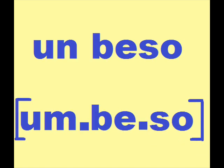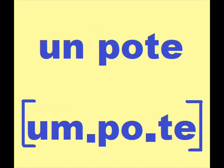There's also assimilation when you have an N and a B, because the N takes the point of articulation of the B, so it actually sounds like an M. For example, un beso — said quickly — sounds like un beso, because the N is taking the bilabial point of articulation of the B. The same thing happens in un pote — because P is bilabial, you're pronouncing the N as bilabial, so it sounds like an M: un pote.